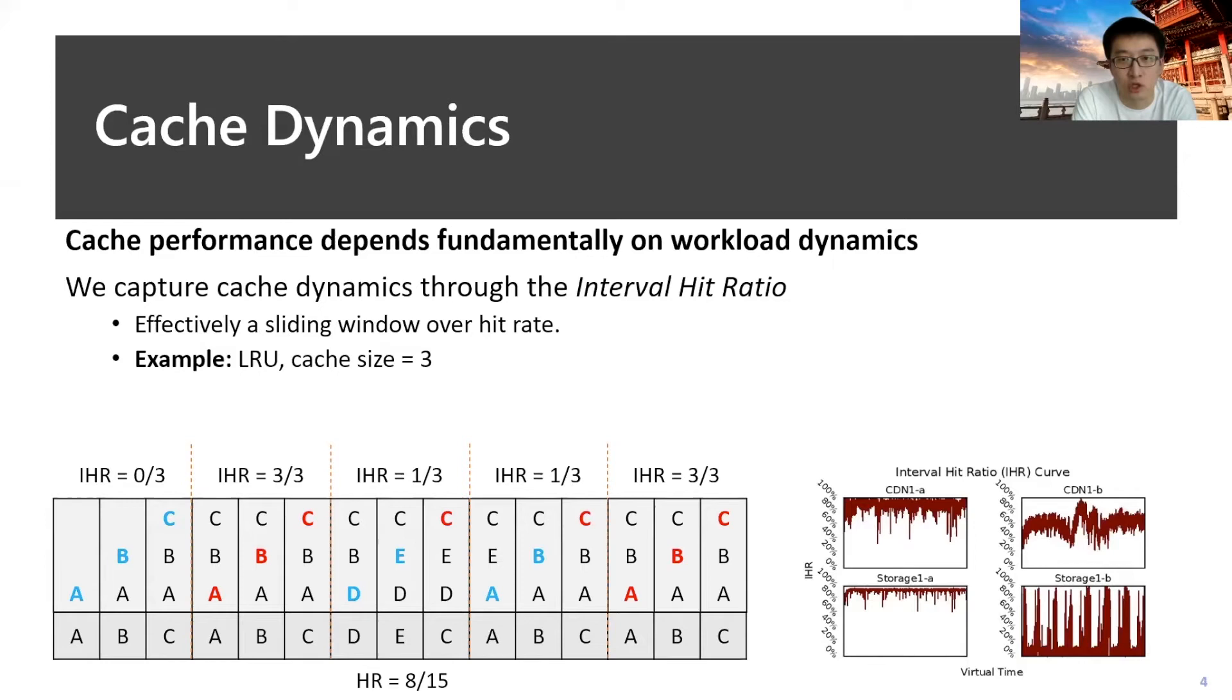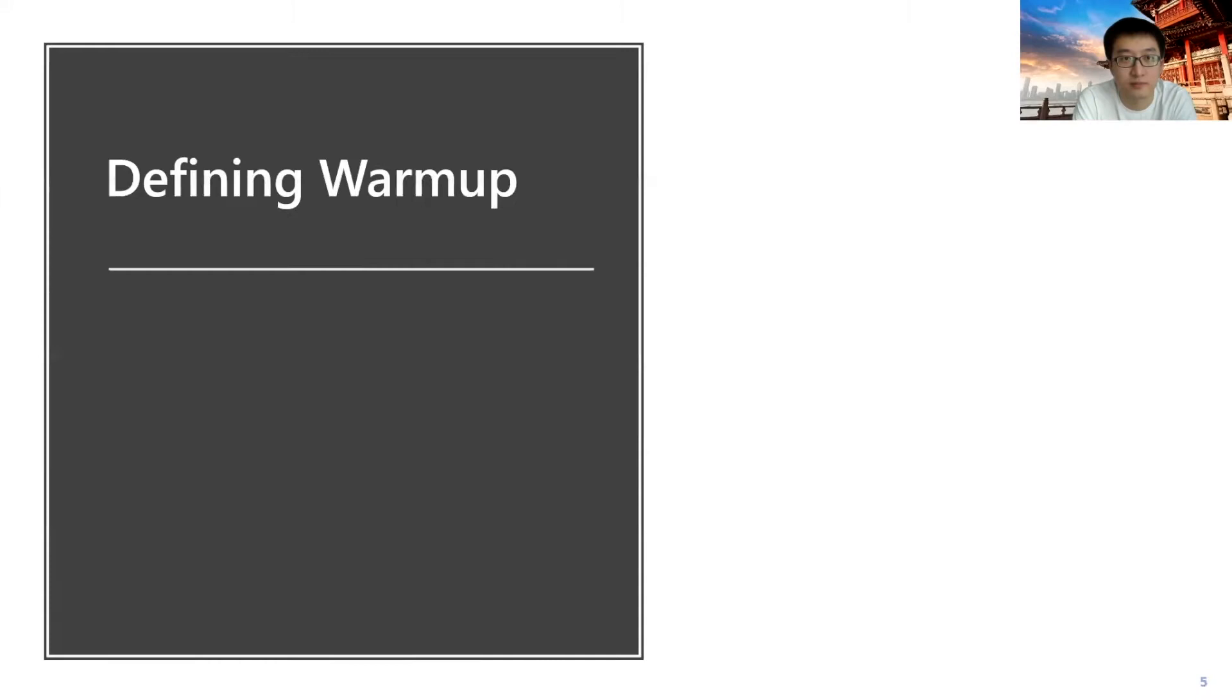Here is an example to show several interval hit ratio curves on real workloads. We can see that the interval hit ratio curve will be different even within similar workloads in the same group like CDN or storage. It could be obviously high, it could be dynamic, or they could have some periodical patterns.